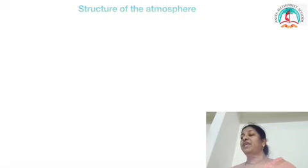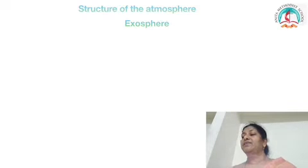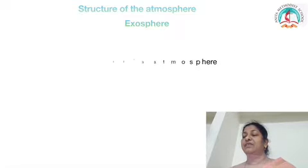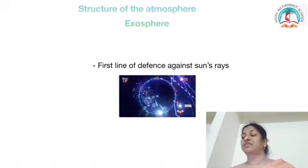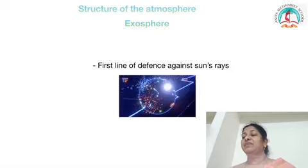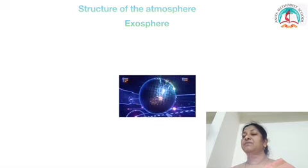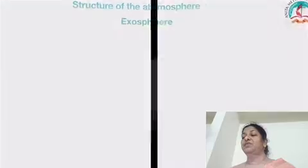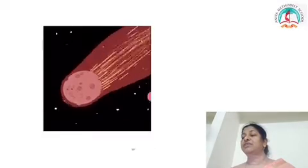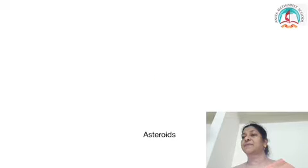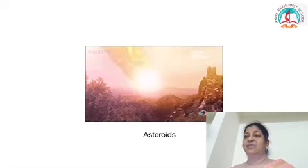The uppermost layer of the atmosphere is the exosphere. This is also the most distant layer of the earth's atmosphere. It is the planet's first line of defense against the sun's rays. This layer protects the planet earth from meteors, asteroids and cosmic rays.